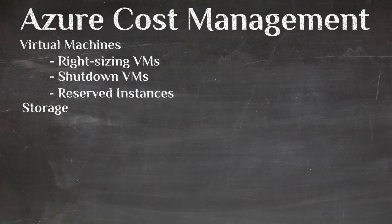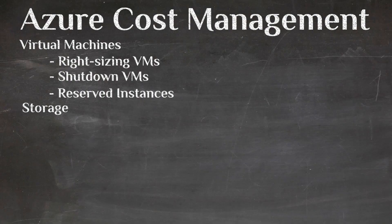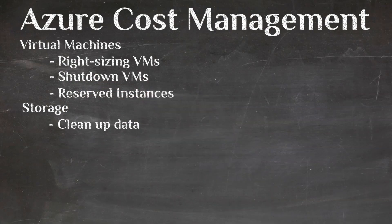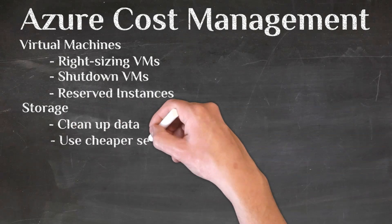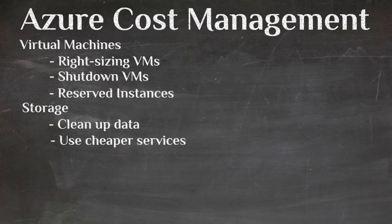Next is storage, which adds up very quickly. The first thing to do is remove any unnecessary data. If you've just completed a migration from on-premises to Azure, go delete all that replicated data — otherwise it just sits in a storage account costing you money. Also make sure you're using the right storage tiers: use hot storage for data you're reading and writing very frequently — it's the most expensive but appropriate for active data.